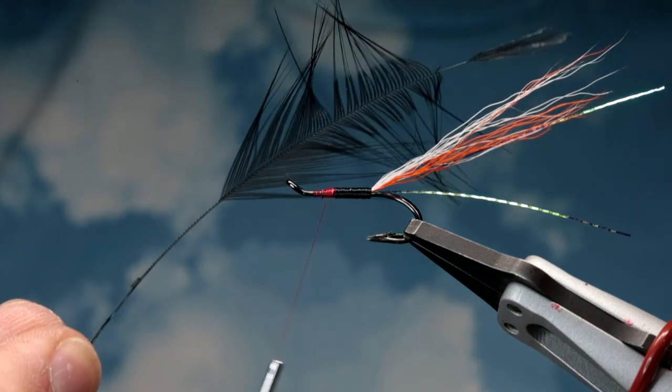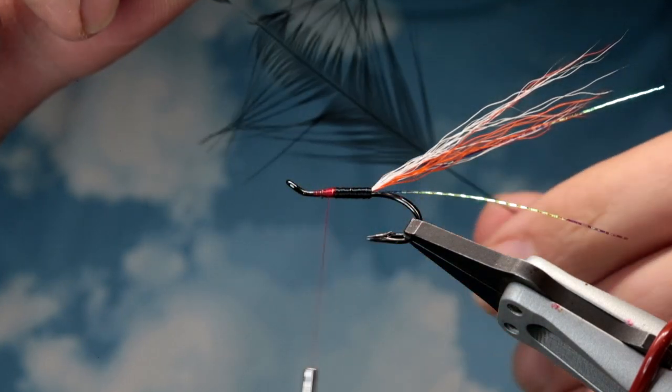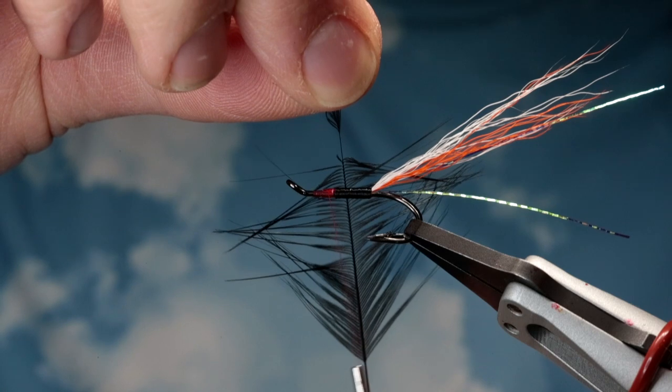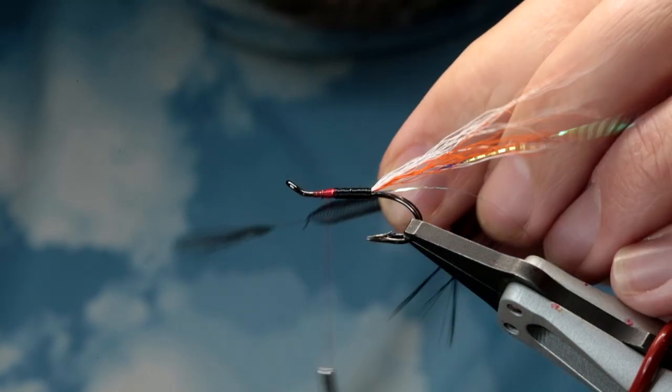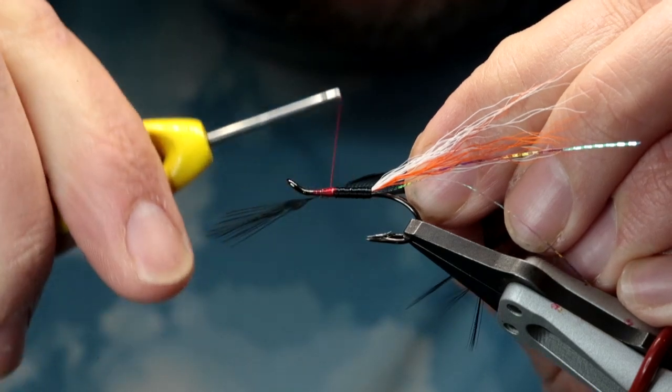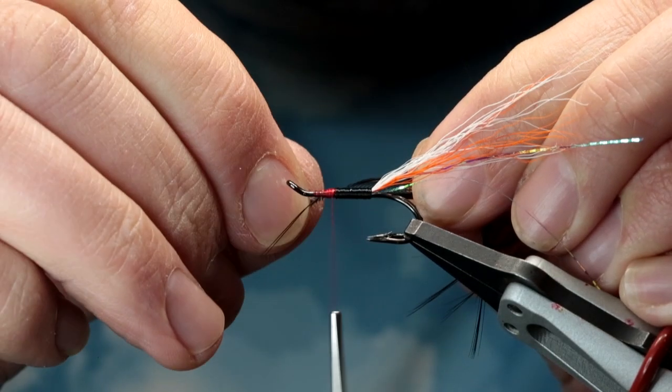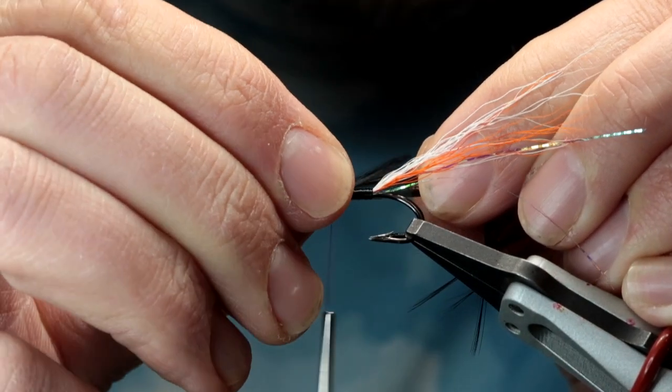The next bit I'm going to tie in is a black cock hackle. Now this hackle is quite long, as you can see the fibers are going back past the hook, which I think is the point of this. I might be wrong, but that's what I'm doing.